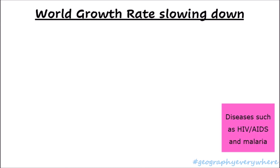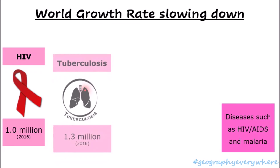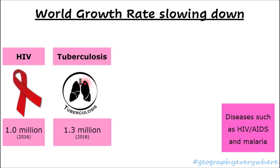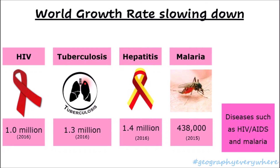The last reason that the world's population has been growing at a slower rate is because of diseases such as HIV and malaria. In 2016, HIV killed around 1 million people, tuberculosis killed around 1.3 million, hepatitis around 1.4 million, and malaria killed around half a million people. All these diseases and infections reduce life expectancies, meaning people live for a shorter amount of time — especially in poorer countries that might have the world's highest birth rates.